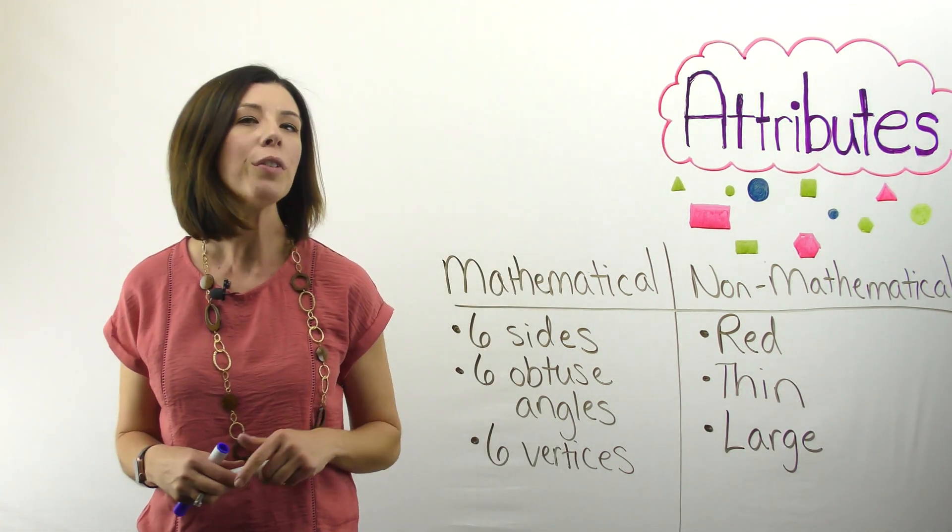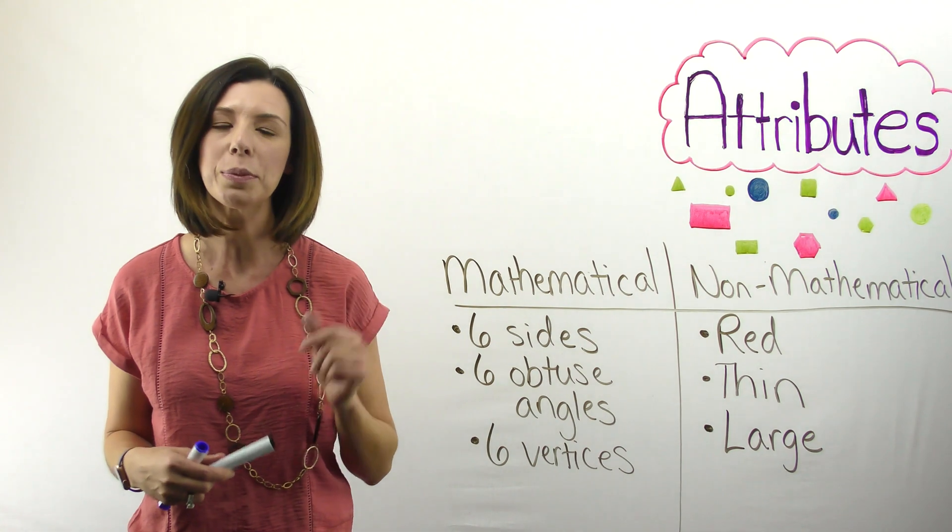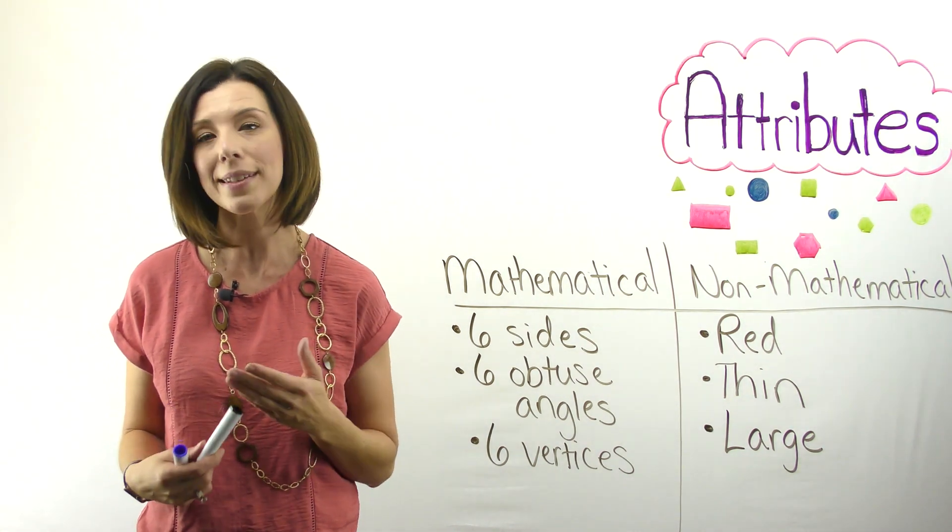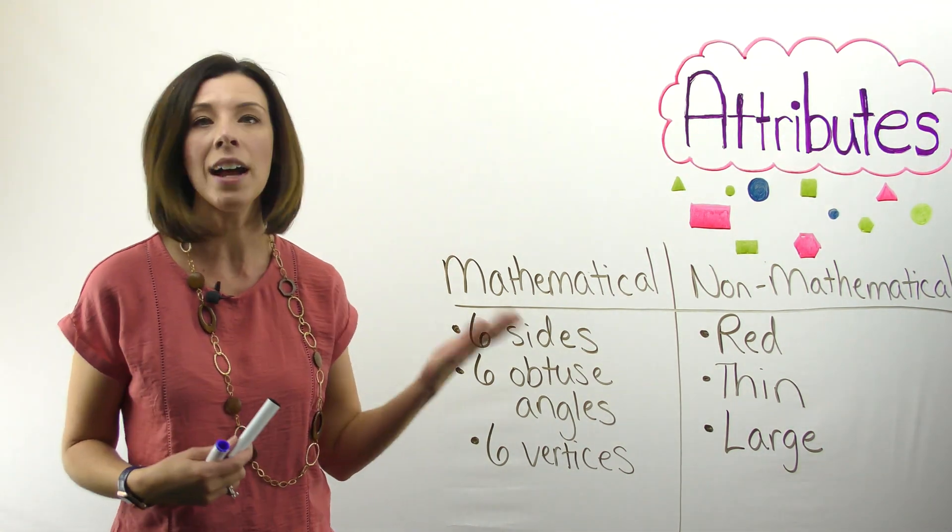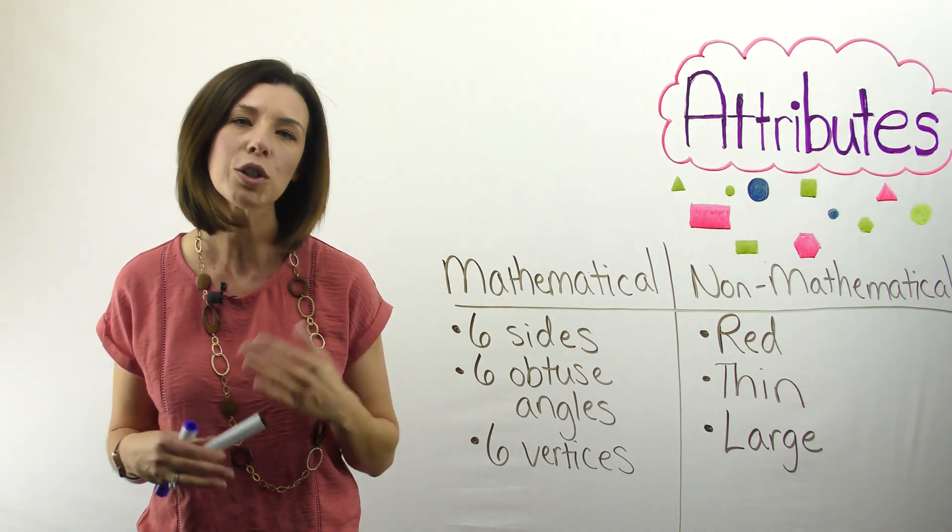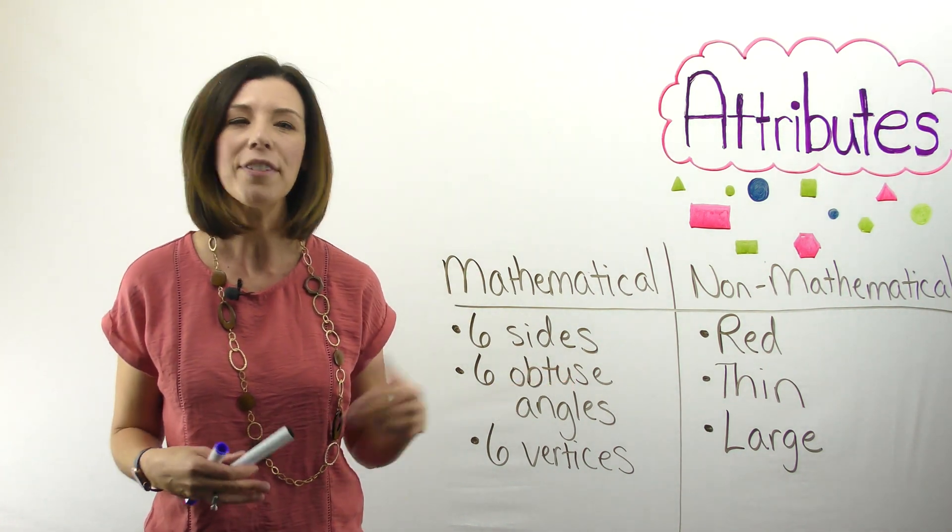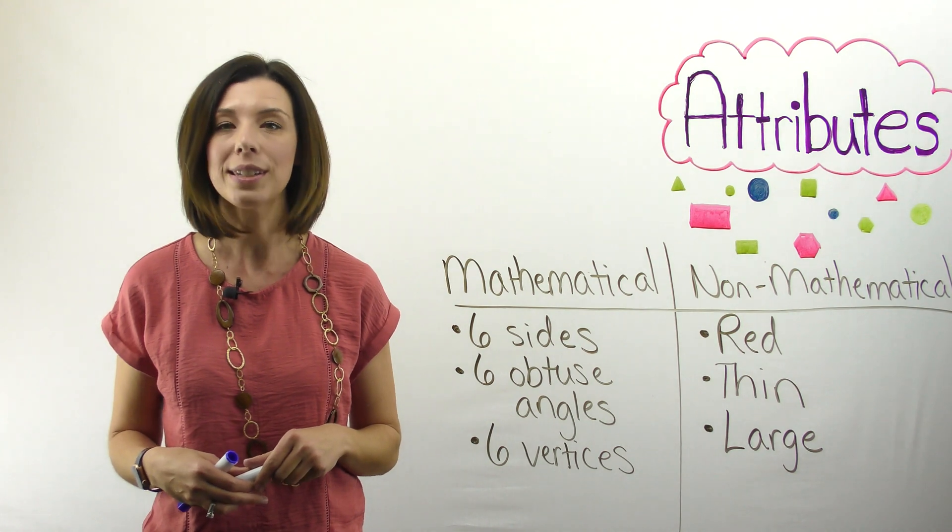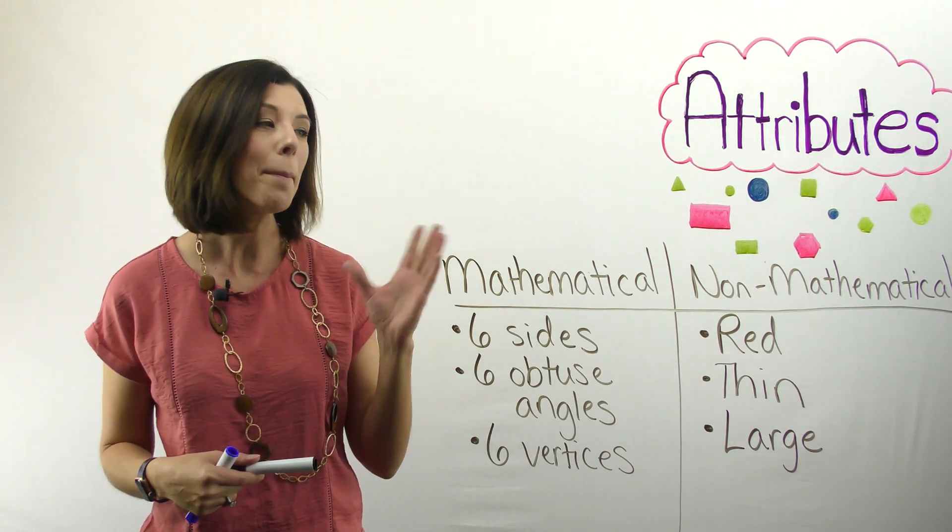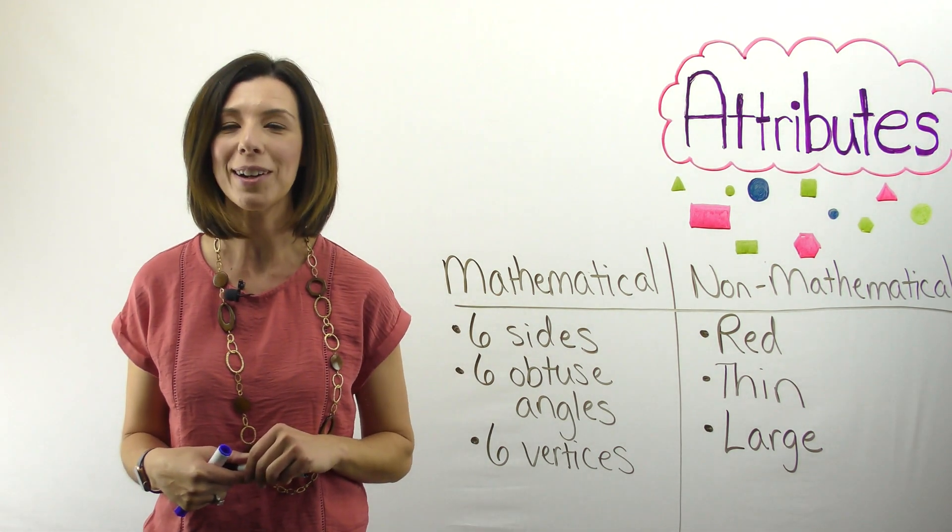Now, something that you should know if you've ever touched actual attribute blocks, they can be made out of either plastic or foam. That would be another non-mathematical attribute. Obviously, if you're using the virtual manipulatives, you won't have that factor, but something to consider. Now that we've talked about mathematical versus non-mathematical attributes, let's talk about attribute trains.